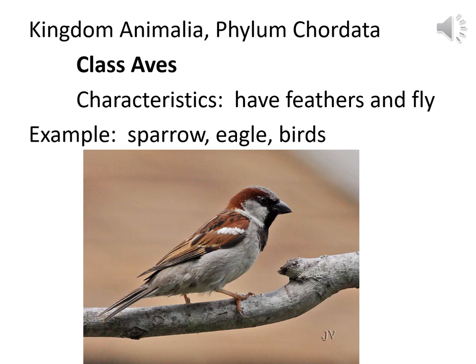Birds are in Class Aves because they have feathers and fly. The handout talks about the little sparrow, but eagles and all sorts of other birds would have feathers and fly. What about penguins? Penguins still have feathers. They don't exactly fly through the air, but they're very aerodynamic underwater — they fly through the water. Concentrate on the feathers.